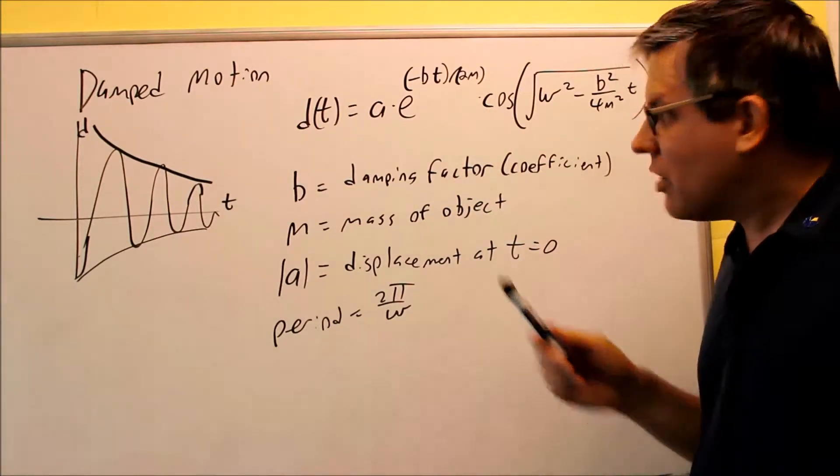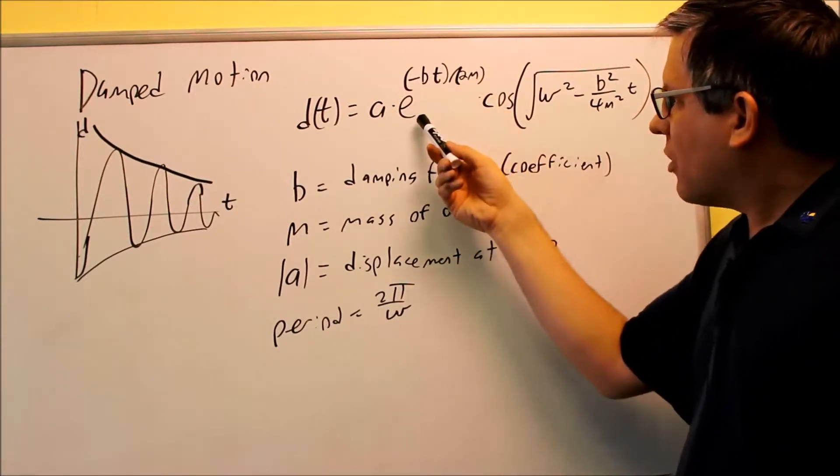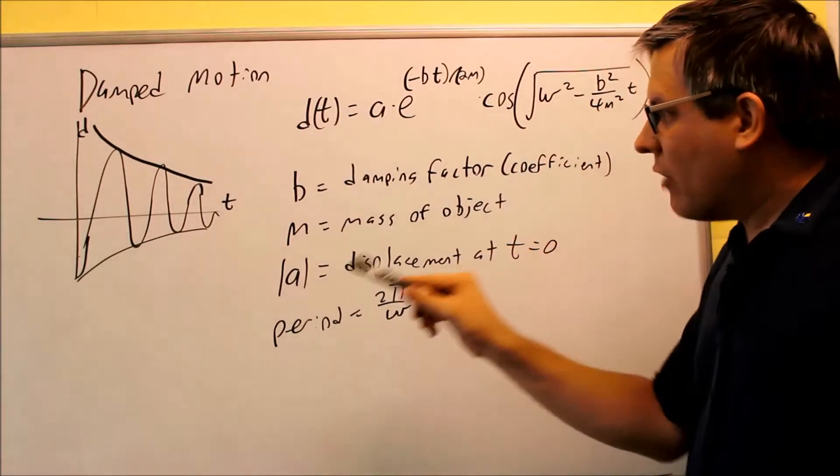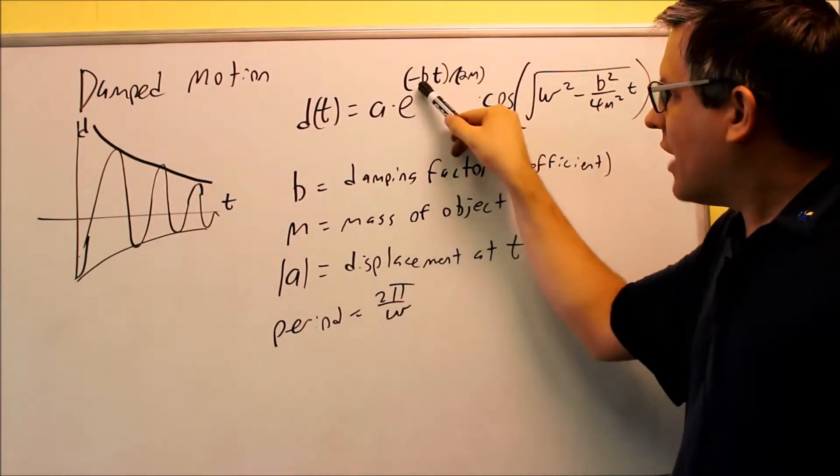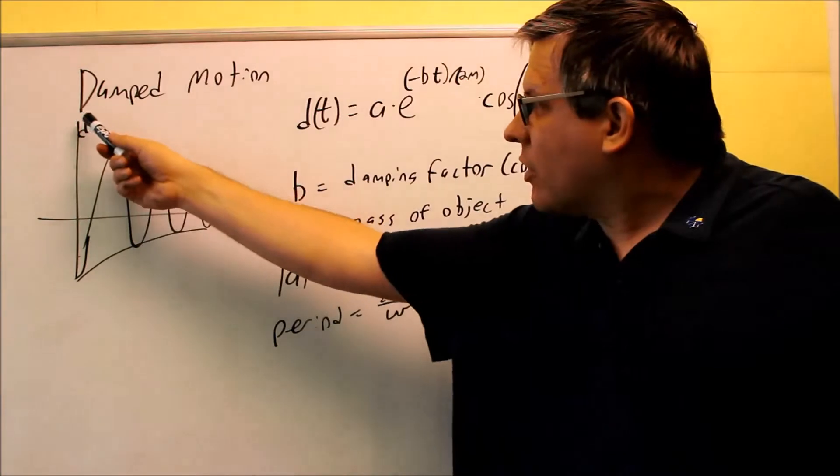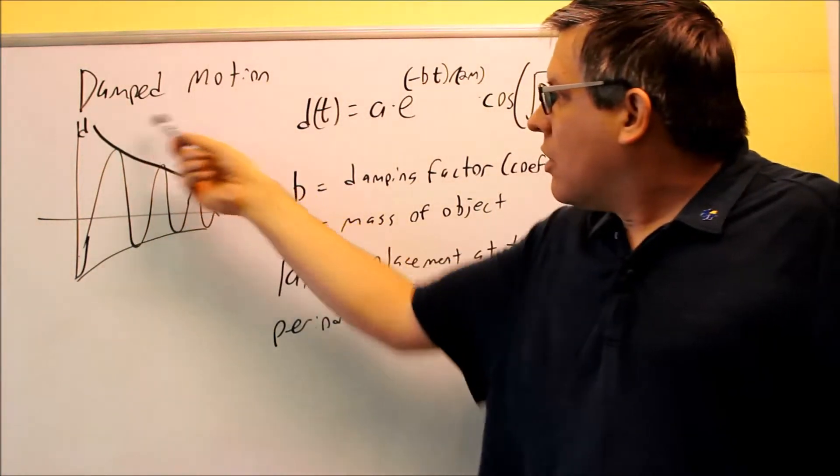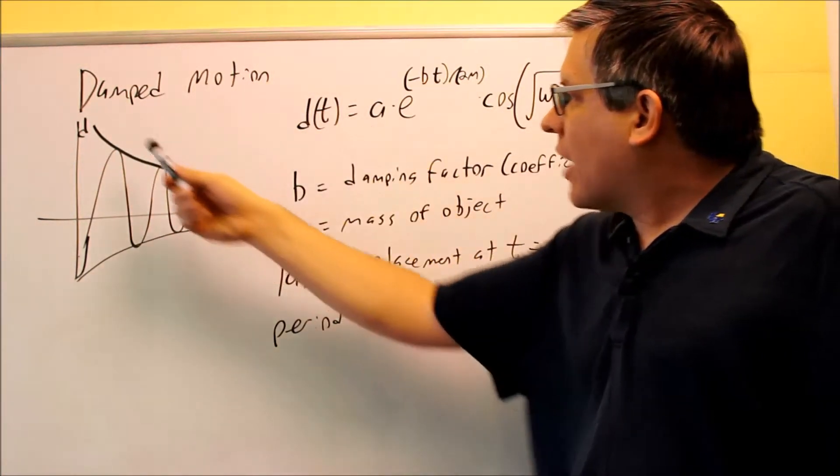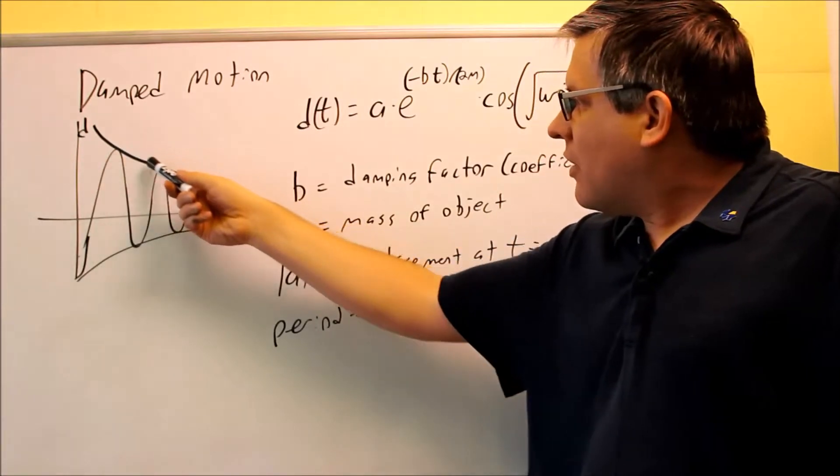Well, that goes back to precalculus. And if we draw something E to the X, we have an exponential, but notice we have a negative here in this case. Now a negative would be a line that looks like this. So actually, your amplitude, the A value here, actually depends on this function.